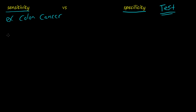Every test can be either positive or negative. Let's say you run Bob's test — Bob's test is either positive or negative. What does that mean? Positive or negative sensitivity, or positive or negative specificity? That's what you have to ask.